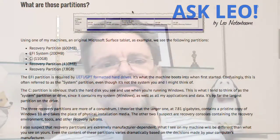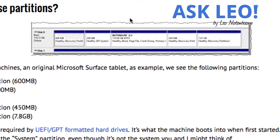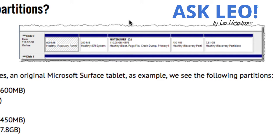What are those partitions? Using one of my machines — an original Microsoft Surface tablet — as an example, we see the following partitions: a recovery partition at 600 megabytes, an EFI system partition at 200 megabytes, C drive at 110 gigabytes, a recovery partition of 450 megabytes, and a recovery partition of 7.8 gigabytes. The EFI partition is required by UEFI GPT formatted hard drives. It's what the machine boots into when first started. Confusingly, this is often referred to as the system partition, even though it's not the system you and I might think of.